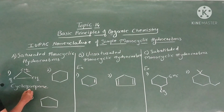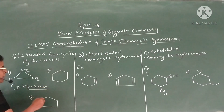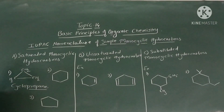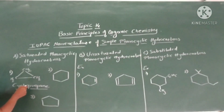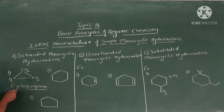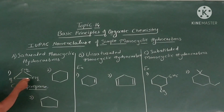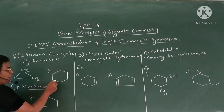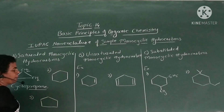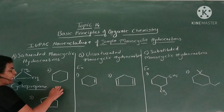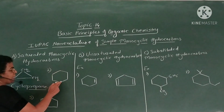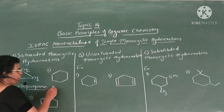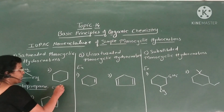The parent alkane is propane, but all three carbon atoms are in a ring structure. Therefore we write the prefix 'cyclo' before propane, giving cyclopropane. In the next example, there are six carbon atoms — it is hexane — but all six carbon atoms are in a ring structure. Therefore it becomes cyclohexane.